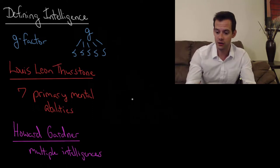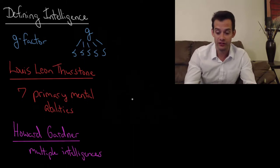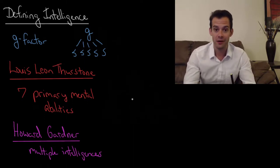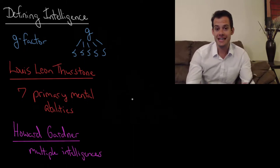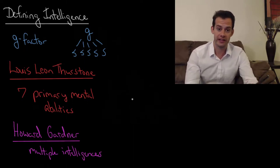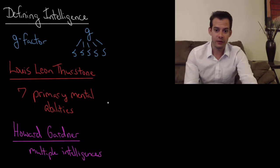His list included things like verbal comprehension, word fluency, number facility, spatial visualization, associative memory, perceptual speed, and reasoning. He thought that these influenced particular groups of skills. So we have some mental ability and it influences a particular group of skills.